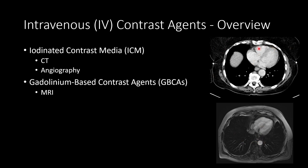On a contrast CT, you can see the heart is opacified, the aorta is opacified, and we get visualization of the liver. Similarly on MRI with gadolinium, the blood within the heart and the aorta is bright. Both iodinated contrast and gadolinium contrast serve a very similar purpose — one is used for CT or angiography, and the other for MRI.